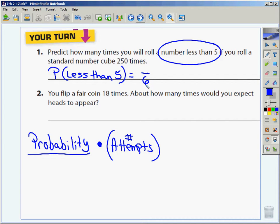How many of those faces have a number that's less than five? Four. Four. One, two, three, and four.